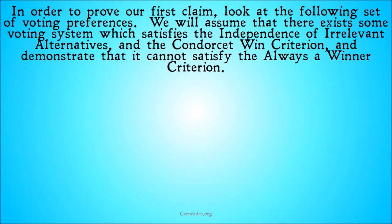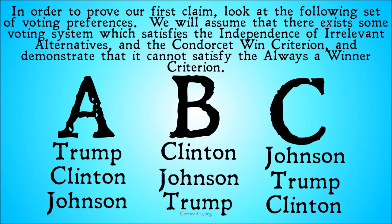Now, we're going to look at the following set of voting preferences and try to prove that if we assume unrestricted domain and unrestricted range, then independence of irrelevant alternatives and the Condorcet-Win criterion will create a situation where there may, in some situations, not be a winner — so it won't satisfy the always-winner criterion. We're imagining some voting system — not specifying what it is — which already satisfies independence of irrelevant alternatives and the Condorcet-Win criterion.